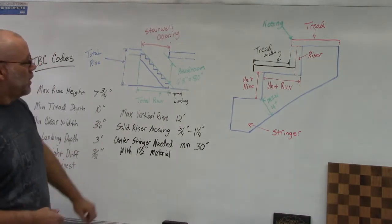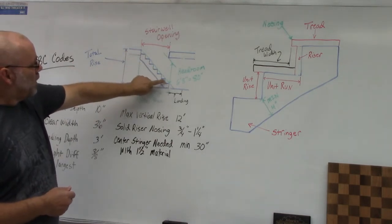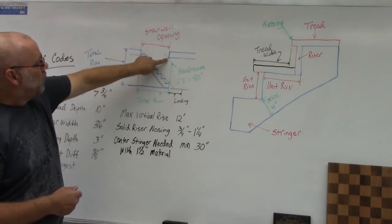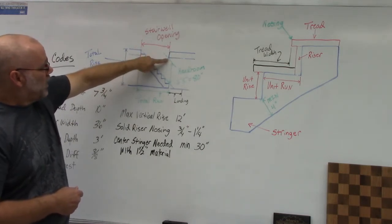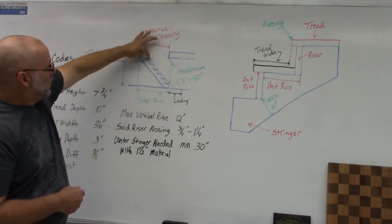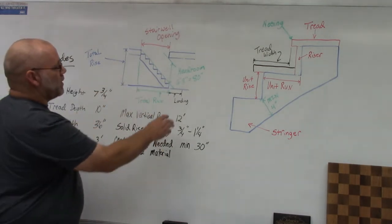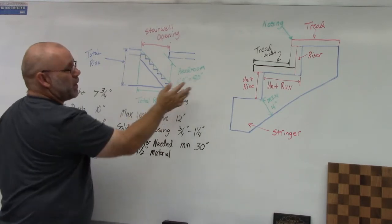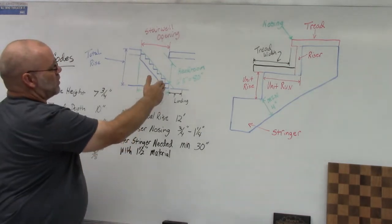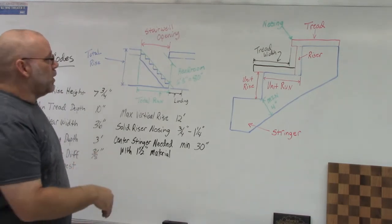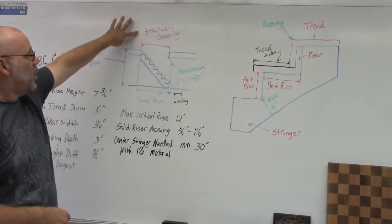Headroom is measured from the tip of the nosing — that green line — to the lowest point on the other floor. You draw a line parallel to the stair line, then a vertical line, and that distance has to be six feet eight inches, or 80 inches. If it's not, you have to move your staircase back or make it a little steeper to achieve 80 inches of headroom.